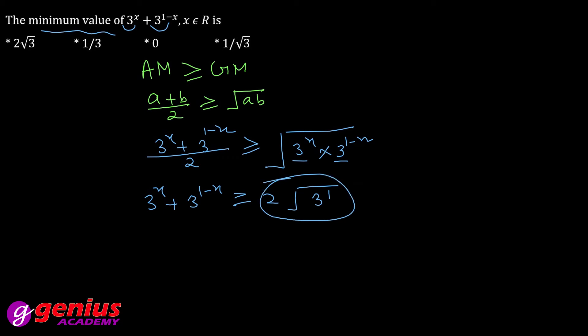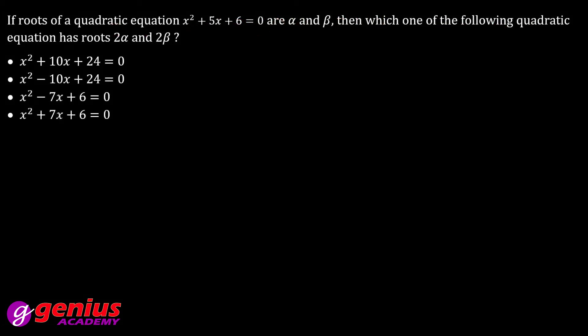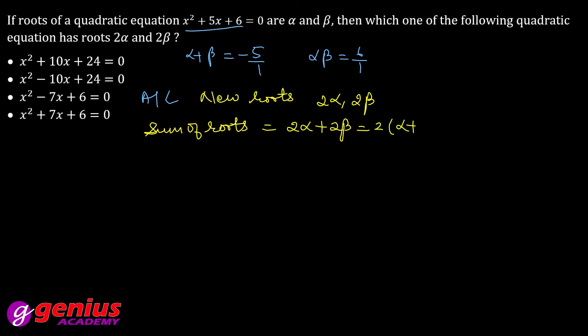If roots of the quadratic equation are alpha and beta, then which of the following quadratic equation has roots 2 alpha and 2 beta? Simple. Sum of roots is minus B by A, product of roots is C by A. According to the question, new roots are 2 alpha and 2 beta. Sum of roots is 2 times alpha plus beta, which is 2 times minus 5, equals minus 10. Product of roots is 4 times alpha beta, which is 4 times 6, equals 24.